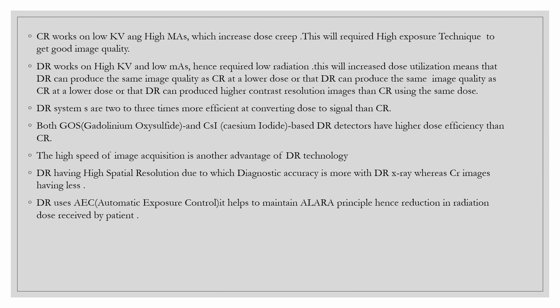DR systems are two to three times more efficient at converting dose to signal than CR. Both Gadolinium Oxysulfide (Gd2O2S) and Cesium Iodide (CsI) based detectors have higher dose efficiency than CR. In DR, the high speed of image acquisition is another advantage, and detectors have high spatial resolution, resulting in greater diagnostic accuracy than CR.